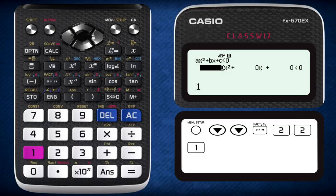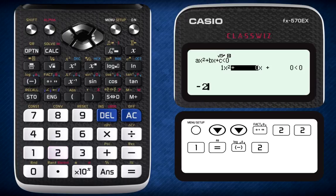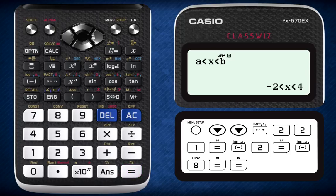Enter the value of 1 as the coefficient of x squared, negative 2 as the coefficient of x, and negative 8 as the constant. Pressing equal again gives you the range of x that satisfies the inequality. And that's it.